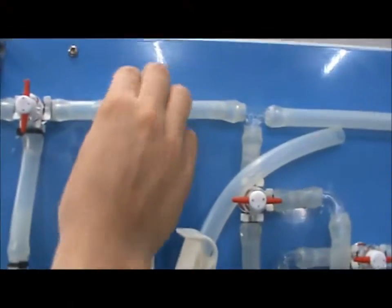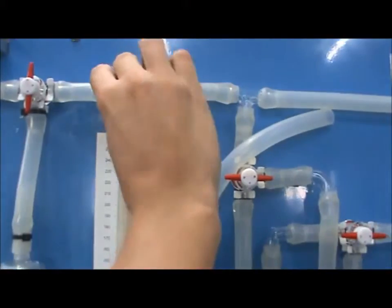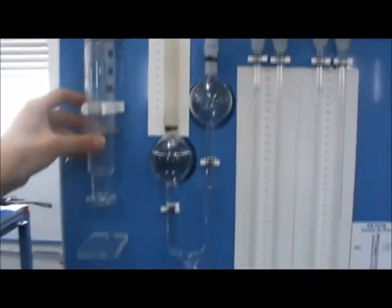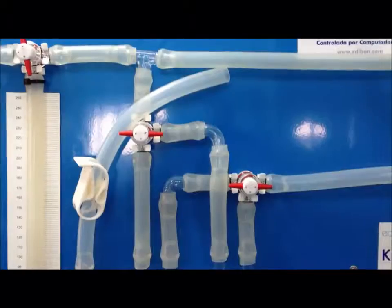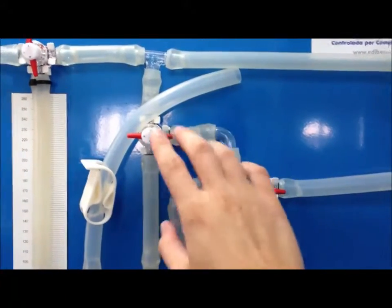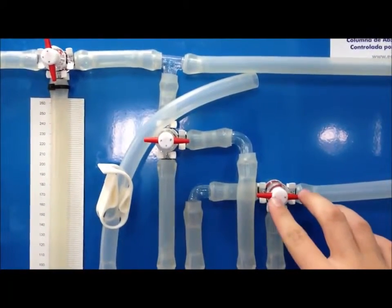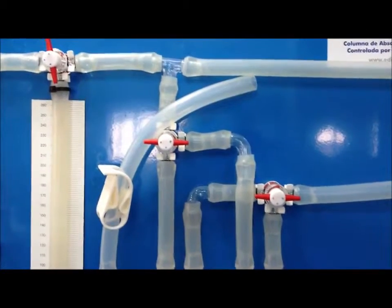To keep this level fixed, close both VT2 and V1, isolating this portion of the line. Ensure that valves VT5 and VT4 are closed, as we will not be using this portion of the unit.